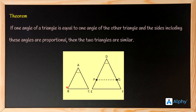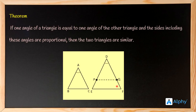We are given two triangles — triangle ABC and triangle DEF. We are given that angle A is equal to angle D. The sides including angle A are AB and AC, and the sides including angle D are DE and DF. Since the sides including these angles are proportional, we are required to show that triangle ABC is similar to triangle DEF.